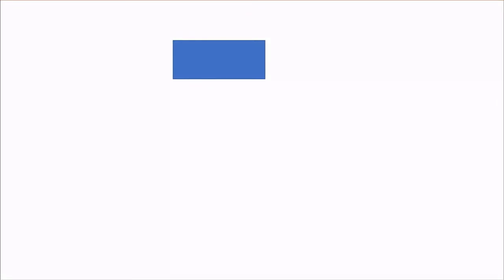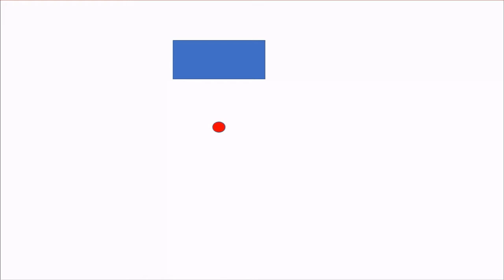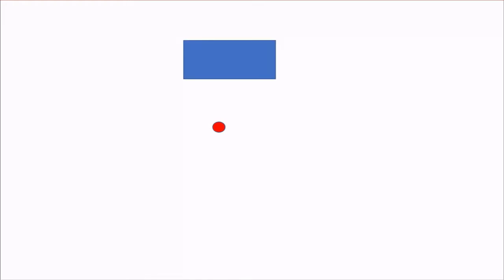Hello. In this video, we will begin discussing rotations. An object can rotate around itself, in which case you get something that looks like this. An object can also rotate around some other point, in which case it looks like this. But before we can discuss how to deal with rotations, we need to define some quantities that are crucial for talking about rotation.